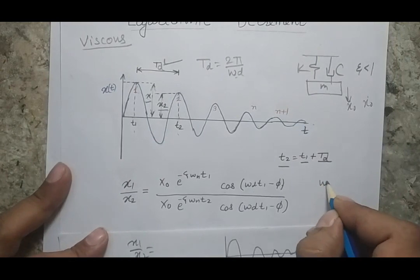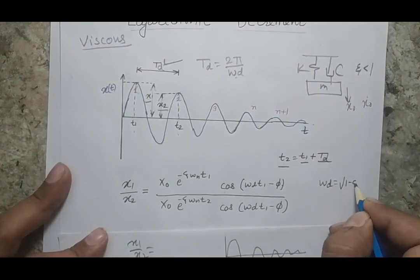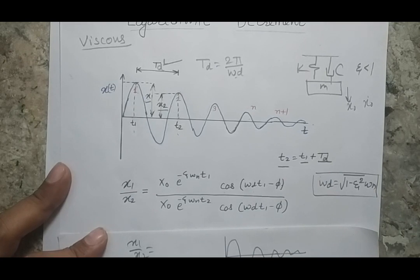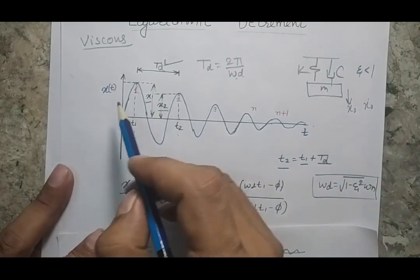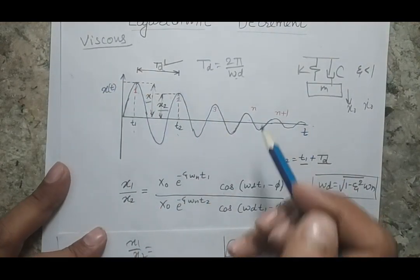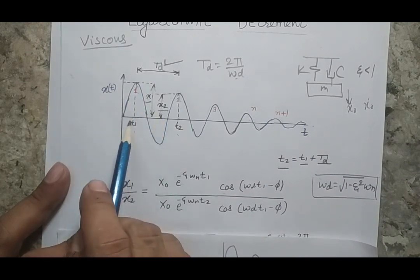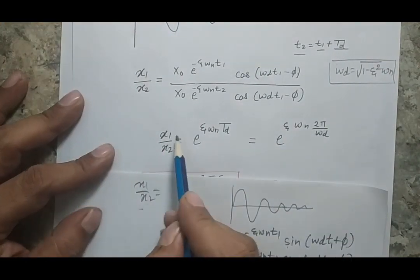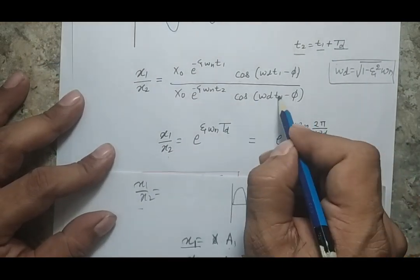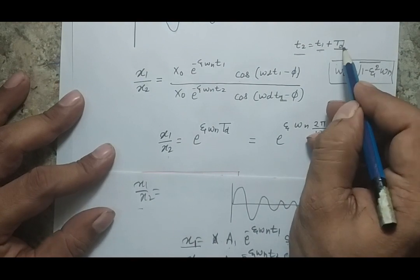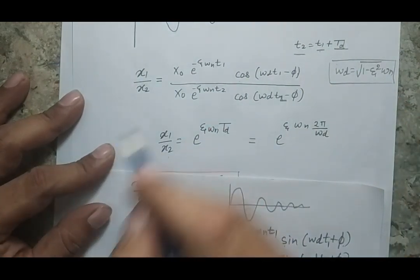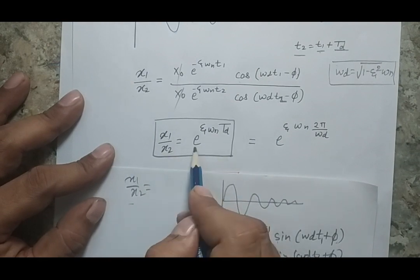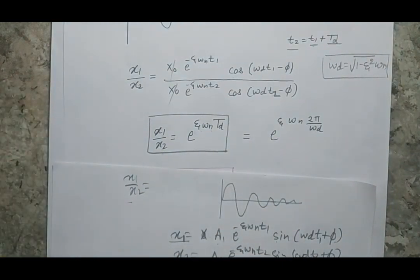The damped time period Td = 2π/ωd, where ωd is the damped natural frequency. We have seen earlier that ωd = ωₙ · √(1 − ζ²). This expression was covered in a previous lecture. When I rearrange all the terms and substitute t2 = t1 + Td, many terms cancel out, and finally I get: x1/x2 = e^(ζ · ωₙ · Td).